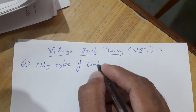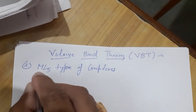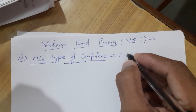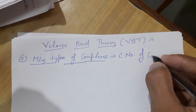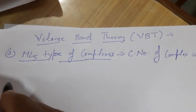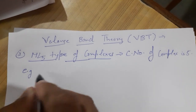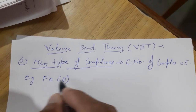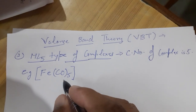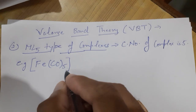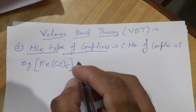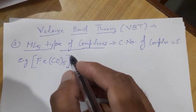ML5 type of complexes are those in which the coordination number is 5. For example, Fe(CO)5, that is pentacarbonyl iron(0). This complex is the only ML5 type in our syllabus. So we will discuss its formation, hybridization, magnetic nature, and geometry in detail with the help of VBT.